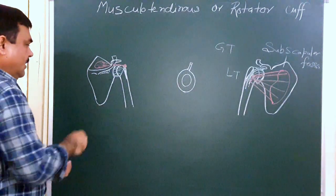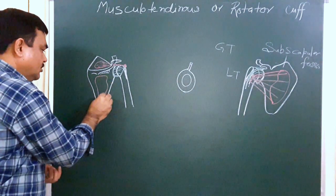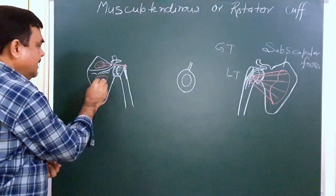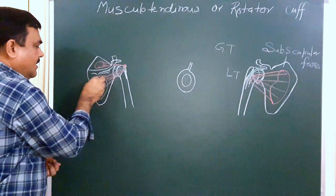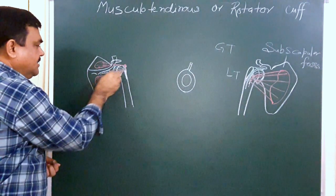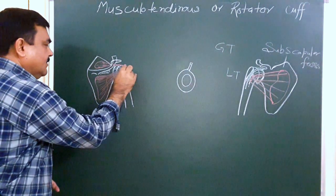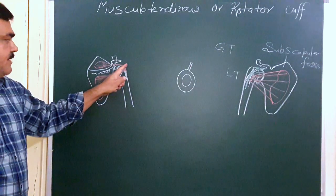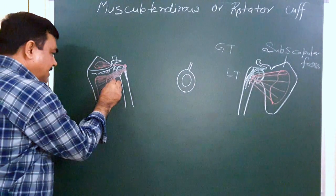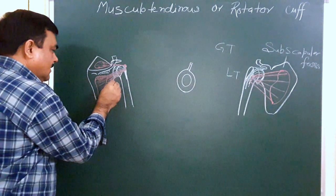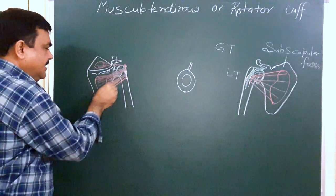Another muscle is attached with the infraspinous fossa — this is the infraspinatus muscle. This muscle is inserted on the greater tubercle just below the supraspinatus. And another muscle is teres minor, which is attached on the lower part of the greater tubercle.